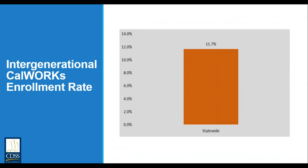Looking at the calculation graphic — it's simply one bar representing the state for the measurement period. In this example, the intergenerational CalWORKs enrollment rate is 11.7%, meaning 11.7% of current adults on CalWORKs were found to have been recipients of CalWORKs while they were under 18 years of age.